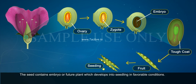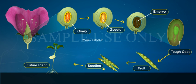The seed contains the embryo or future plant, which develops into a seedling in favorable conditions. This process is called germination.